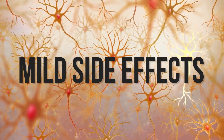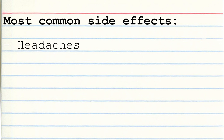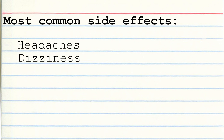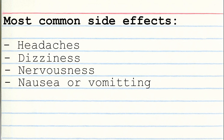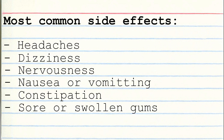The most common mild side effects for phenytoin are headaches, dizziness, nervousness, nausea or vomiting, constipation, and sore or swollen gums.